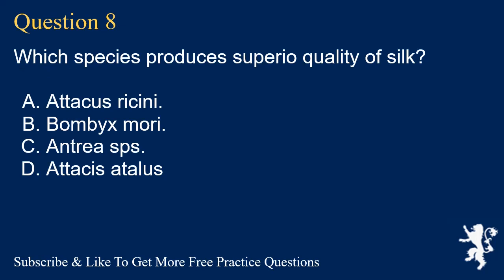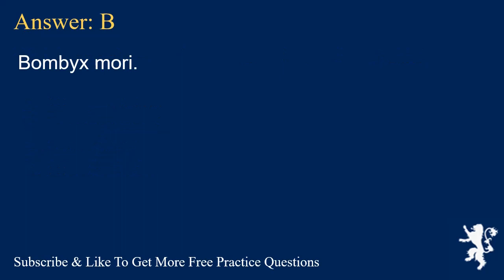Question 8. Which species produces superior quality of silk? A. Atacus ricini. B. Bombyx mori. C. Antria sps. D. Ataciatalus. Answer: B. Bombyx mori.